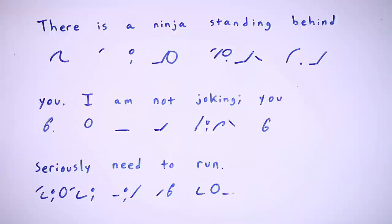But the problem is that both of these systems are incredibly difficult to learn. They take a lot of time and practice, and as a student, you probably don't have that time to dedicate to learning one of them. For example, here is, as best as I can write it with 10 minutes of practice, the statement "there is a ninja standing right behind you, I am not joking, you seriously need to run" written in Gregg shorthand. I'd wager it would take you a bit of time to figure out how to read that, let alone be able to write it proficiently.